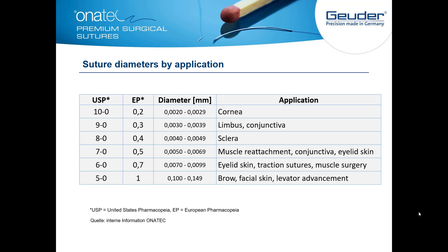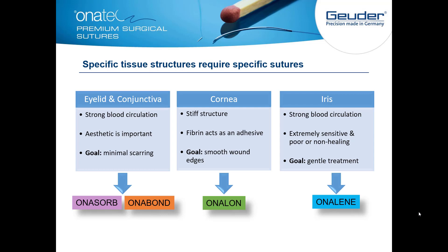The diameter can be indicated in two ways: the USP (United States Pharmacopeia) and the European Pharmacopeia (EP). In the USP system, the highest number indicates the thinnest suture diameter. In the European Pharmacopeia, the indicators are oriented on the real diameters in millimeters. In the synopsis, you can see the most important sutures — the smallest diameter for cornea surgery is 10-0, while thicker sutures are used for scleral, muscle, or lid tissues.